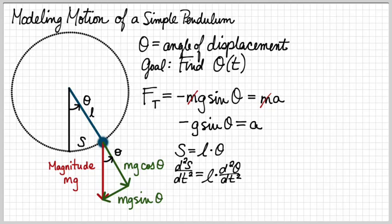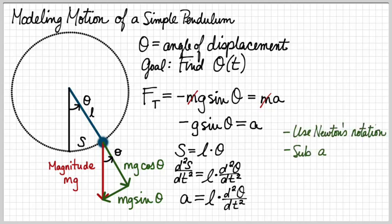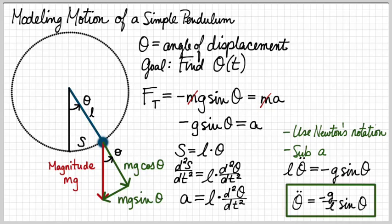Remember that L is constant, and that means that dL/dt is equal to zero. The second derivative of S with respect to time is the same as acceleration, so I substitute a. To pretty it up a little more, I want to use Newton's notation, and I'm also going to substitute negative g sin theta for a. I get L theta double dot equals negative g sin theta, or theta double dot equals negative g over L sin theta.